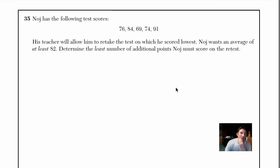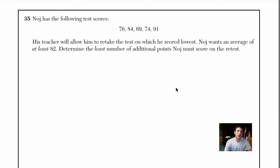This next one says Noj has the following test scores: 76, 84, 69, 74, and 91. His teacher will allow him to retake the test on which he scored the lowest — that's the 69. Noj wants an average of at least 82. Determine the least number of additional points he must score on the retest.